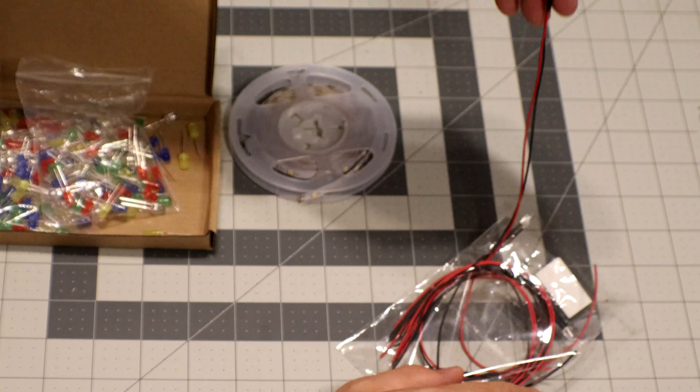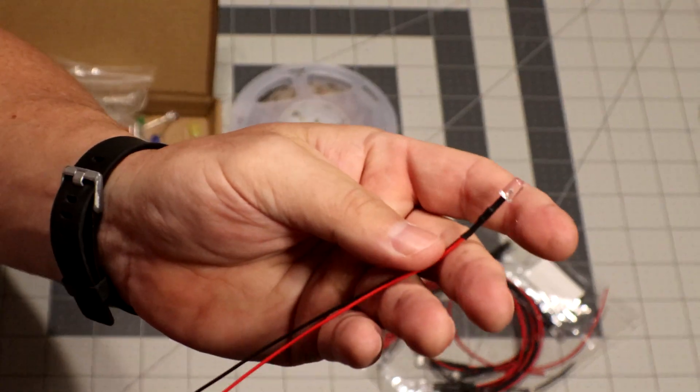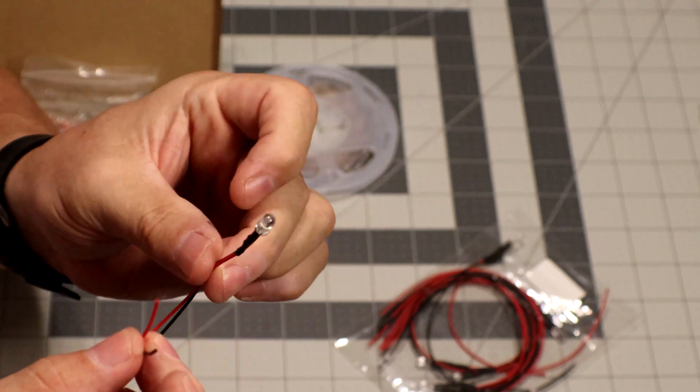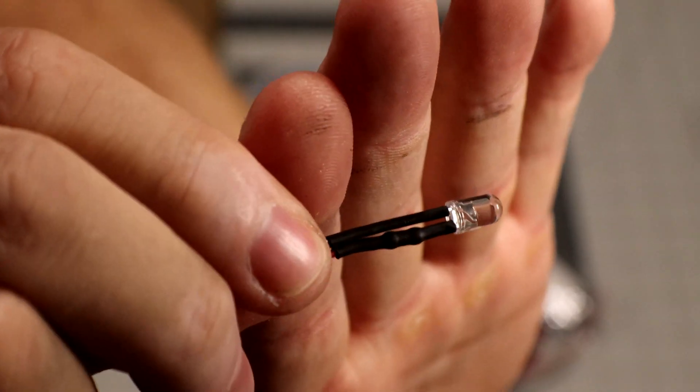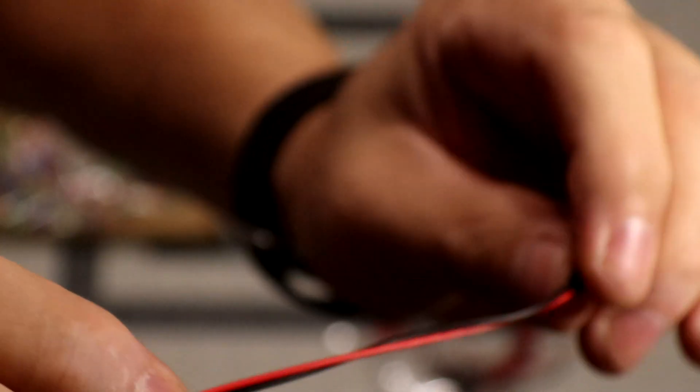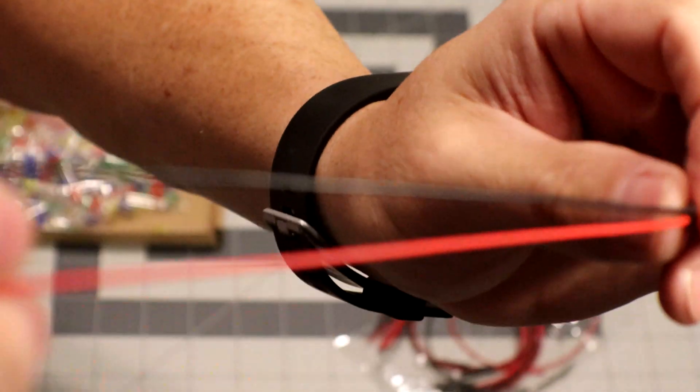You can also get the LEDs that come pre-wired with what I call a tail. So they already have wires attached to them. The bulb itself has some heat shrink tubing that's already holding the connections together, and then they have a black wire, which is the negative side, and a red wire, which is the positive side.